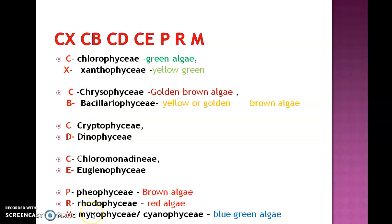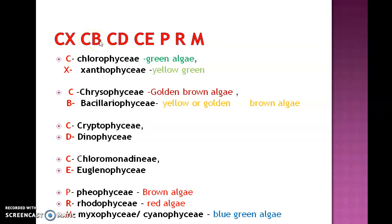The 11 different classes in Fritch's classification are: Chlorophyceae (green algae), Xanthophyceae (yellow-green algae), Chrysophyceae (golden brown algae), Bacillariophyceae (yellow or golden brown algae), Cryptophyceae, Dinophyceae, Chloromonadinae, Euglenophyceae, Phaeophyceae (brown algae), Rhodophyceae (red algae), and Myxophyceae or Cyanophyceae (blue-green algae).